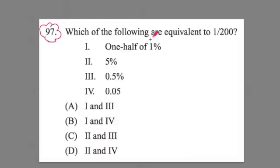Number 97 here. Which of the following are equivalent to 1 over 200? One-half of 1%, 5%, five-tenths of a percent, or five-hundredths? And then it gives us these answer choices. And just so you notice, two of these are correct. So two of these are equal to 1 over 200. Which two are they?